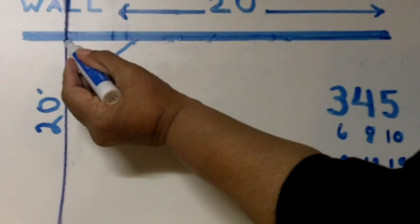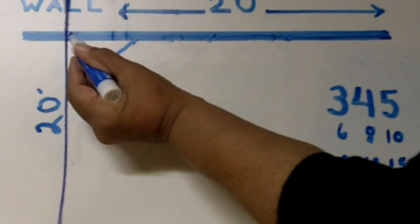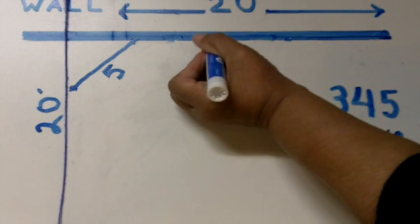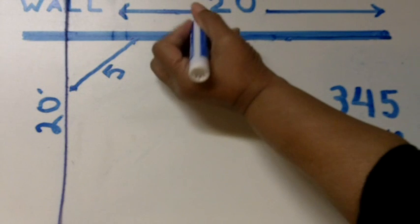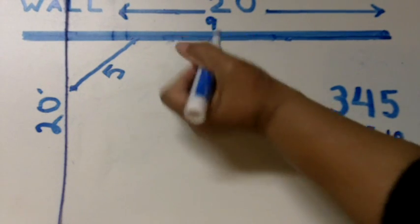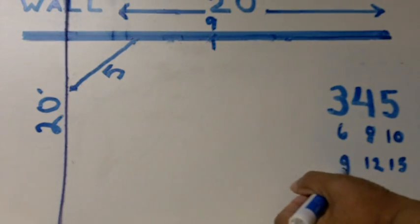So what we're going to do is we're going to measure from this corner along our existing wall 9 feet. So I'm going to measure here 9 feet and make a hash mark. This represents, that hash mark represents 9 feet.